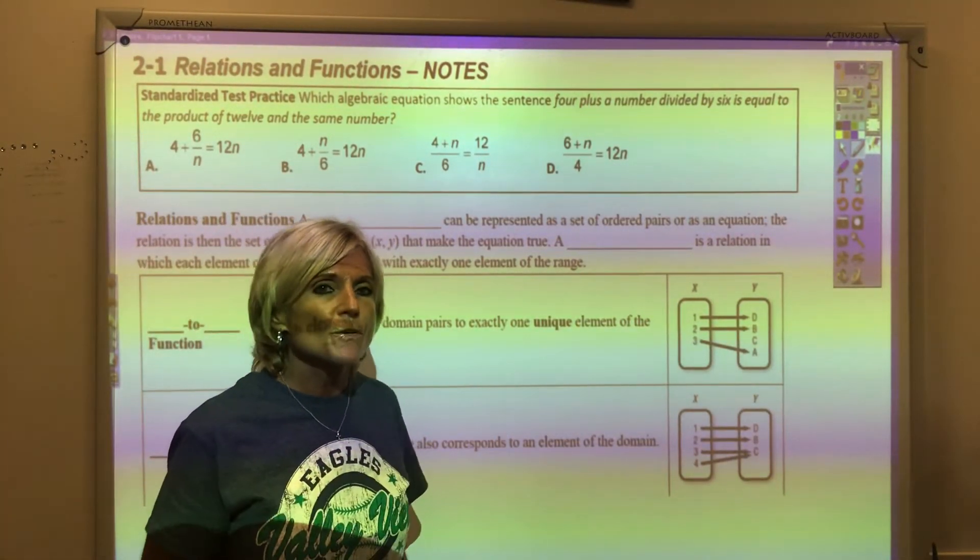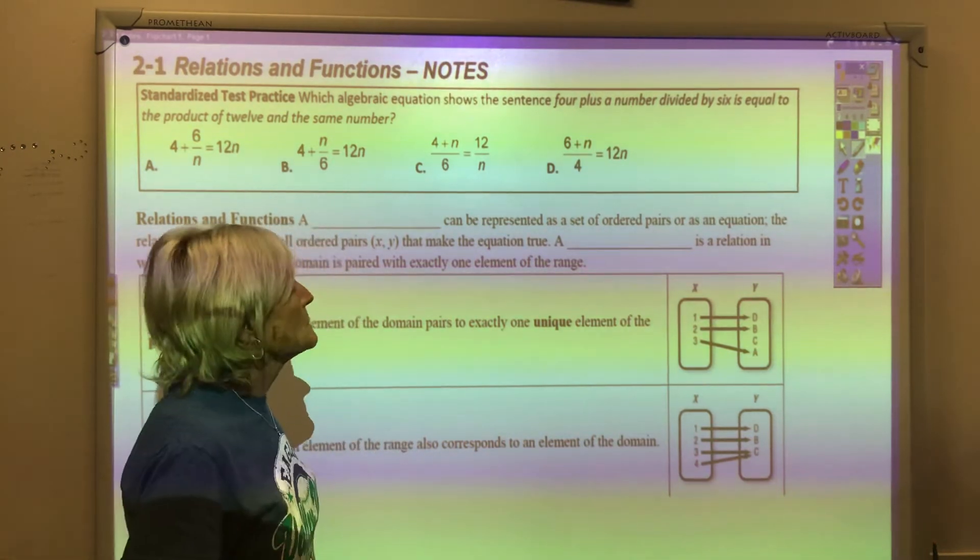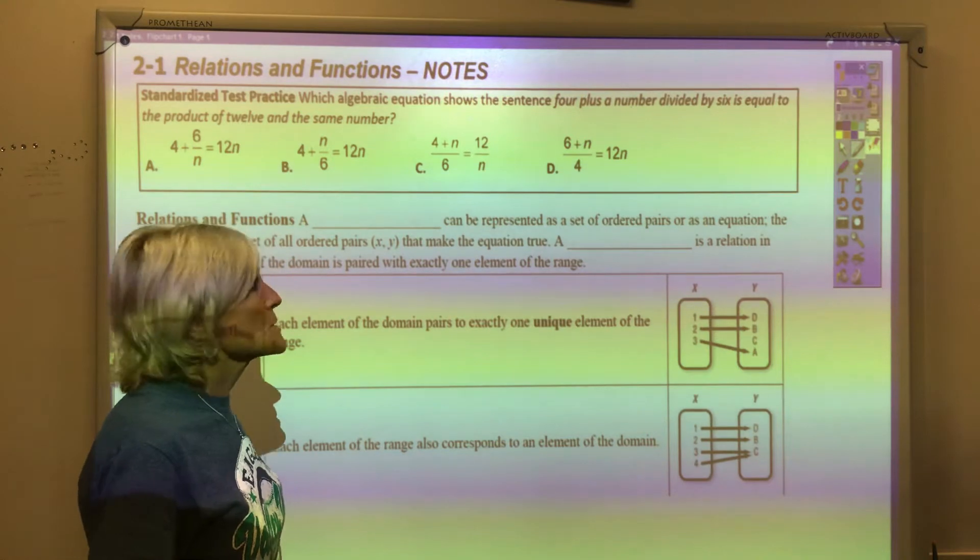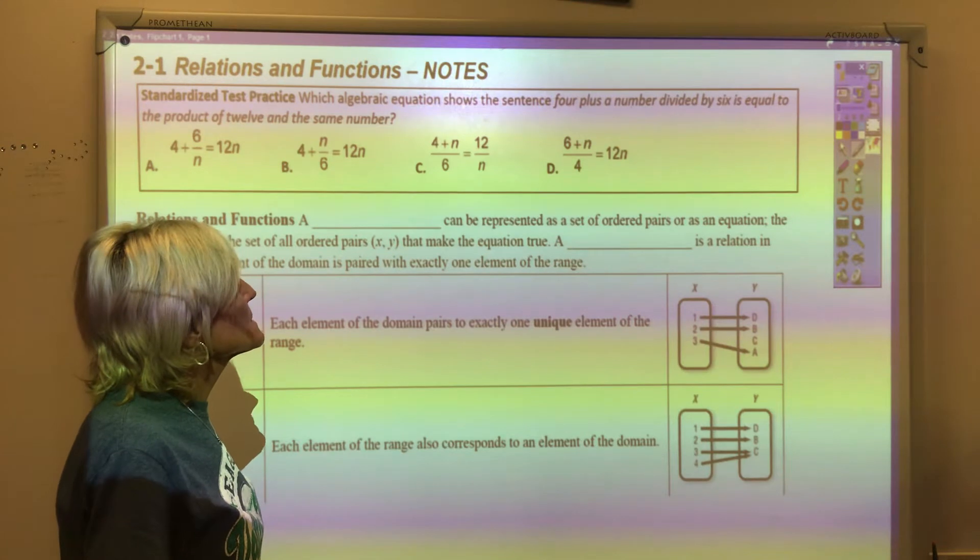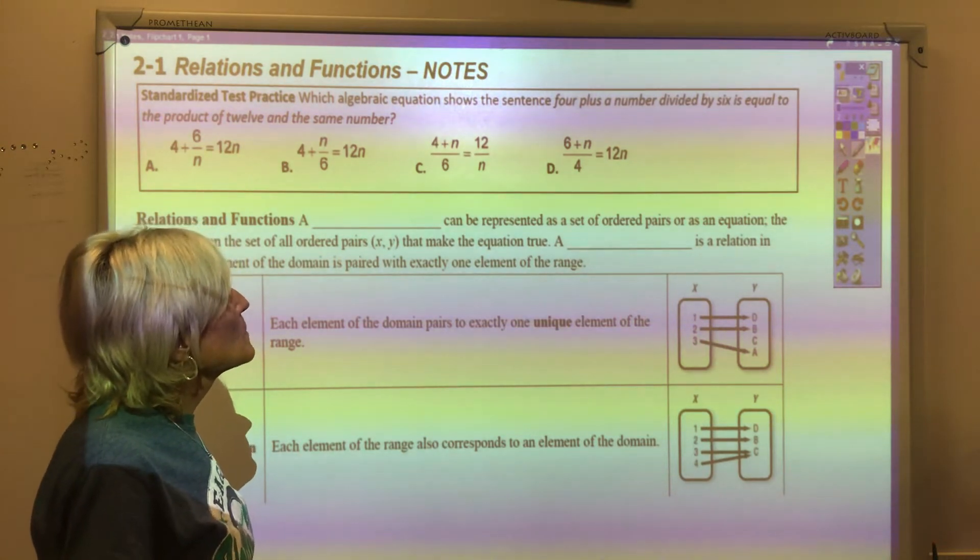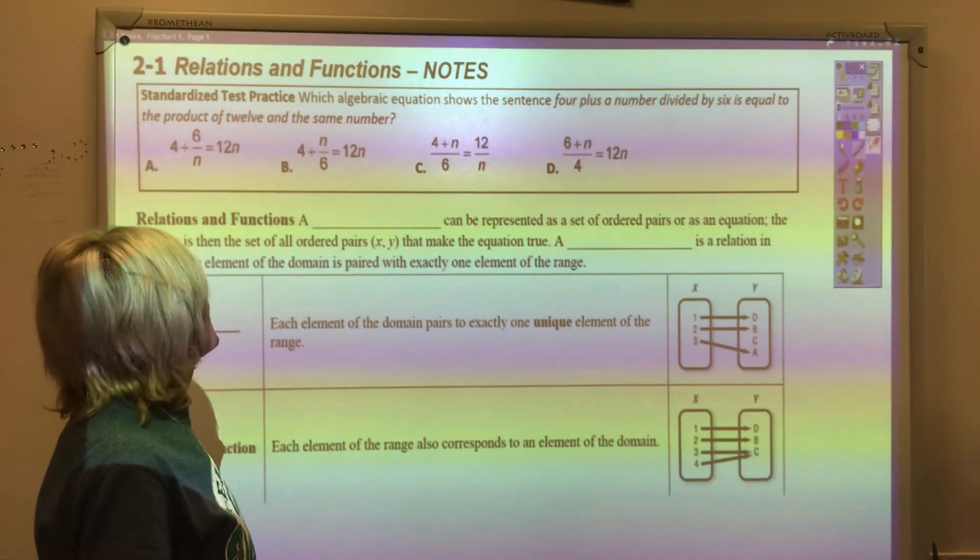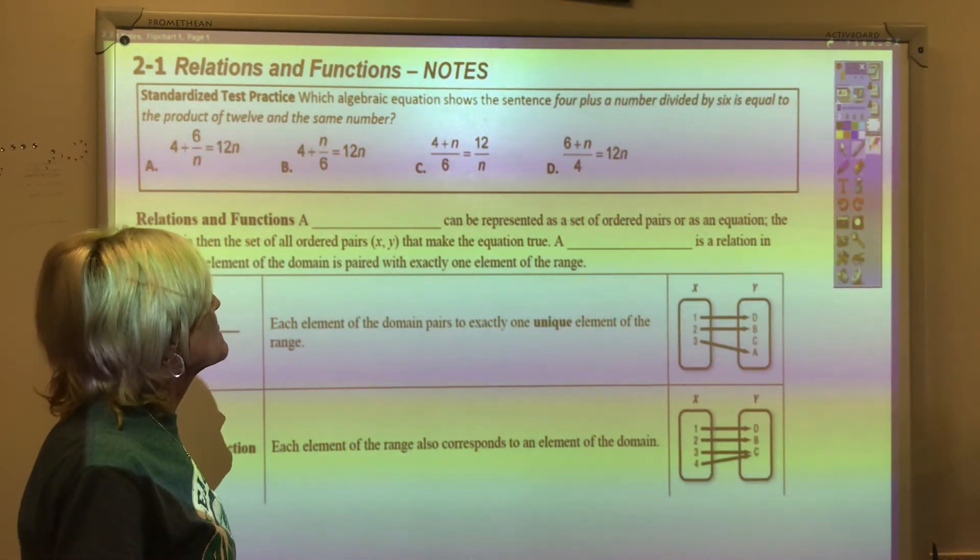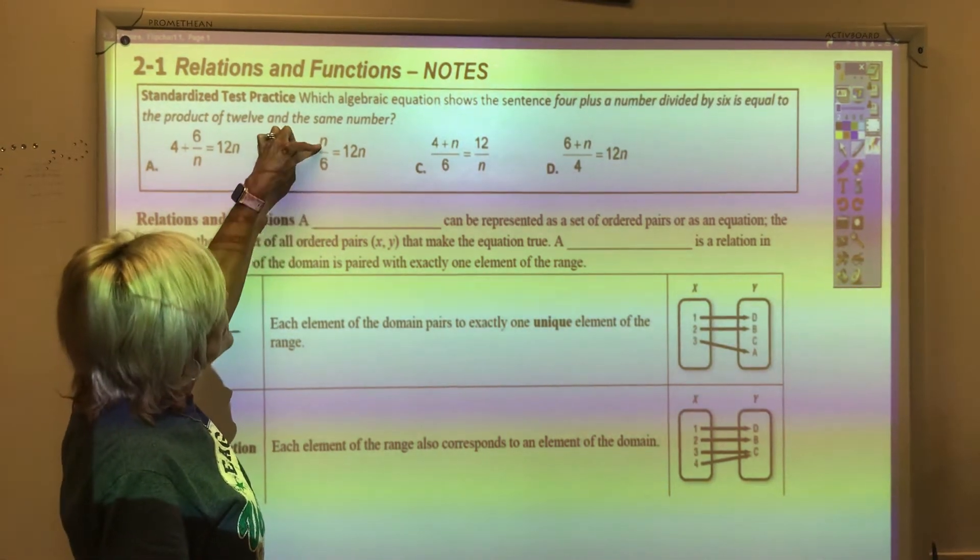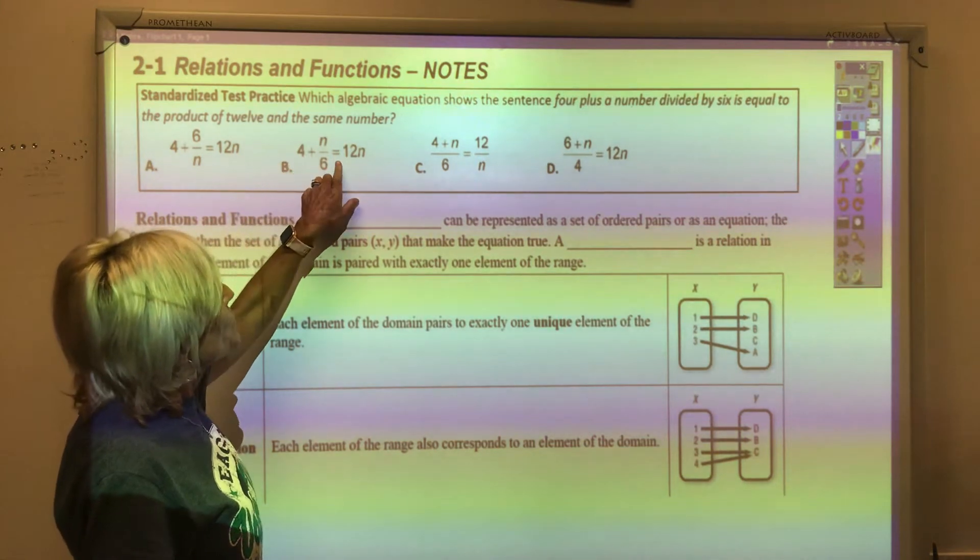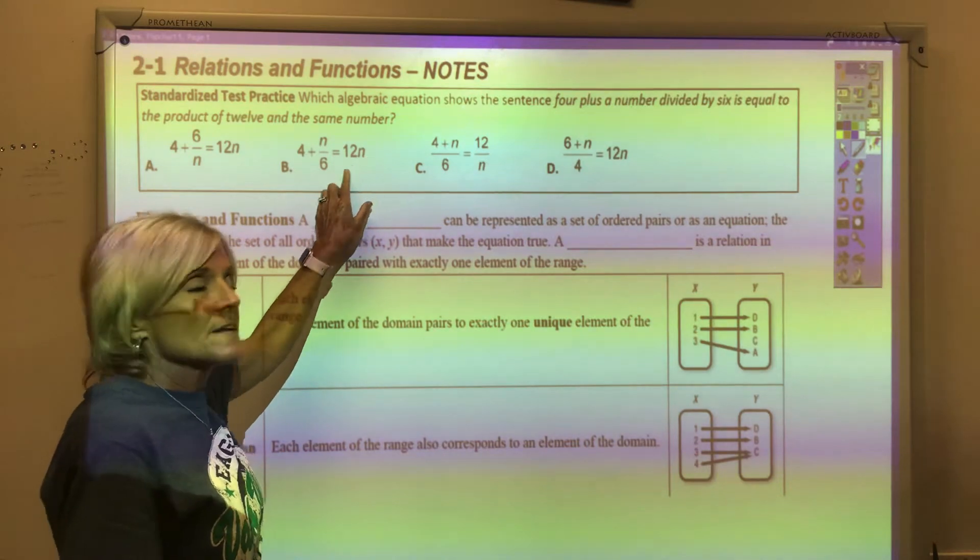Hi class! Today we're going to talk about relations and functions. On the standardized test practice problem, it reads, which algebraic equation shows the sentence 4 plus a number divided by 6 is equal to the product of 12 and the same number. 4 plus a number divided by 6 equals 12, or the product of 12 and the same number. The answer here is B.